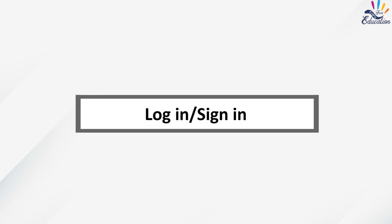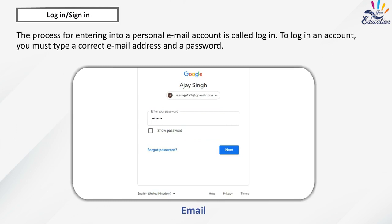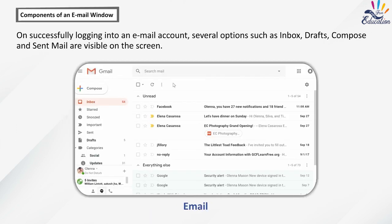Login or Sign In: The process of entering into a personal email account is called login. To login to an account, you must type a correct email address and a password. On successfully logging into an email account, several options such as Inbox, Drafts, Compose and Sent Mail are visible on the screen.